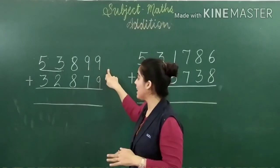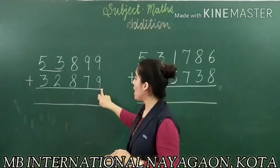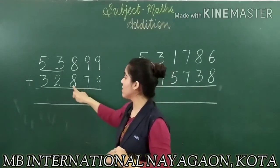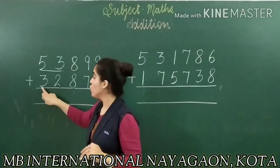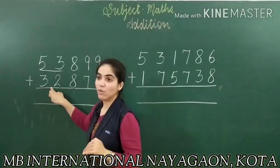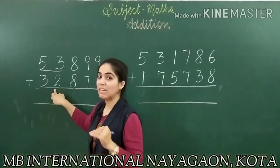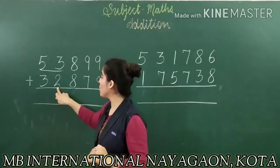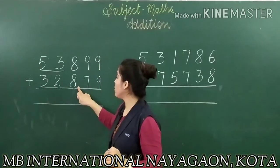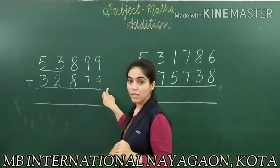The second addend — ones, hundreds, thousands, ten thousands. So both are in the thousands series. We will read it together: thirty-two thousand, eight hundred, seventy-nine.